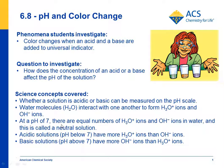At a pH of 7, there's equal numbers of H3O+ and OH- ions in water — that's neutral. Acidic solutions have more H3O+ ions than OH- ions, and basic solutions have more OH- ions than H3O+ ions.